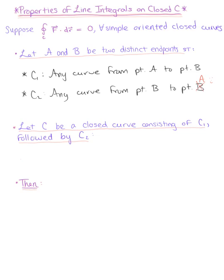Let's think about this graphically. Let's say here is our point A and over here is point B. C sub 1 goes from point A to point B, establishing that orientation, and C sub 2 is the curve from point B back to point A. We note that C is the union of these two curves — the full curve C is C sub 1 united with C sub 2.